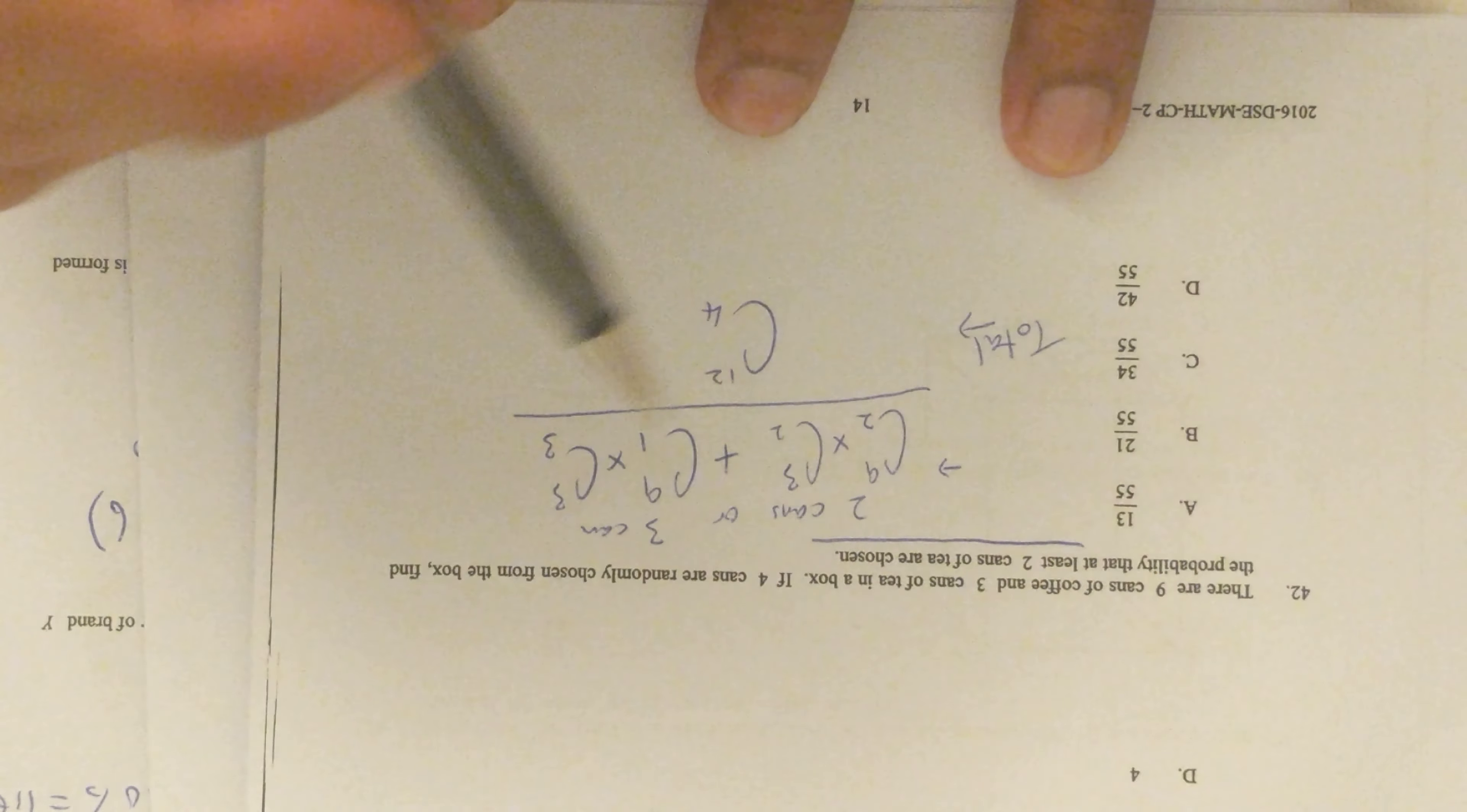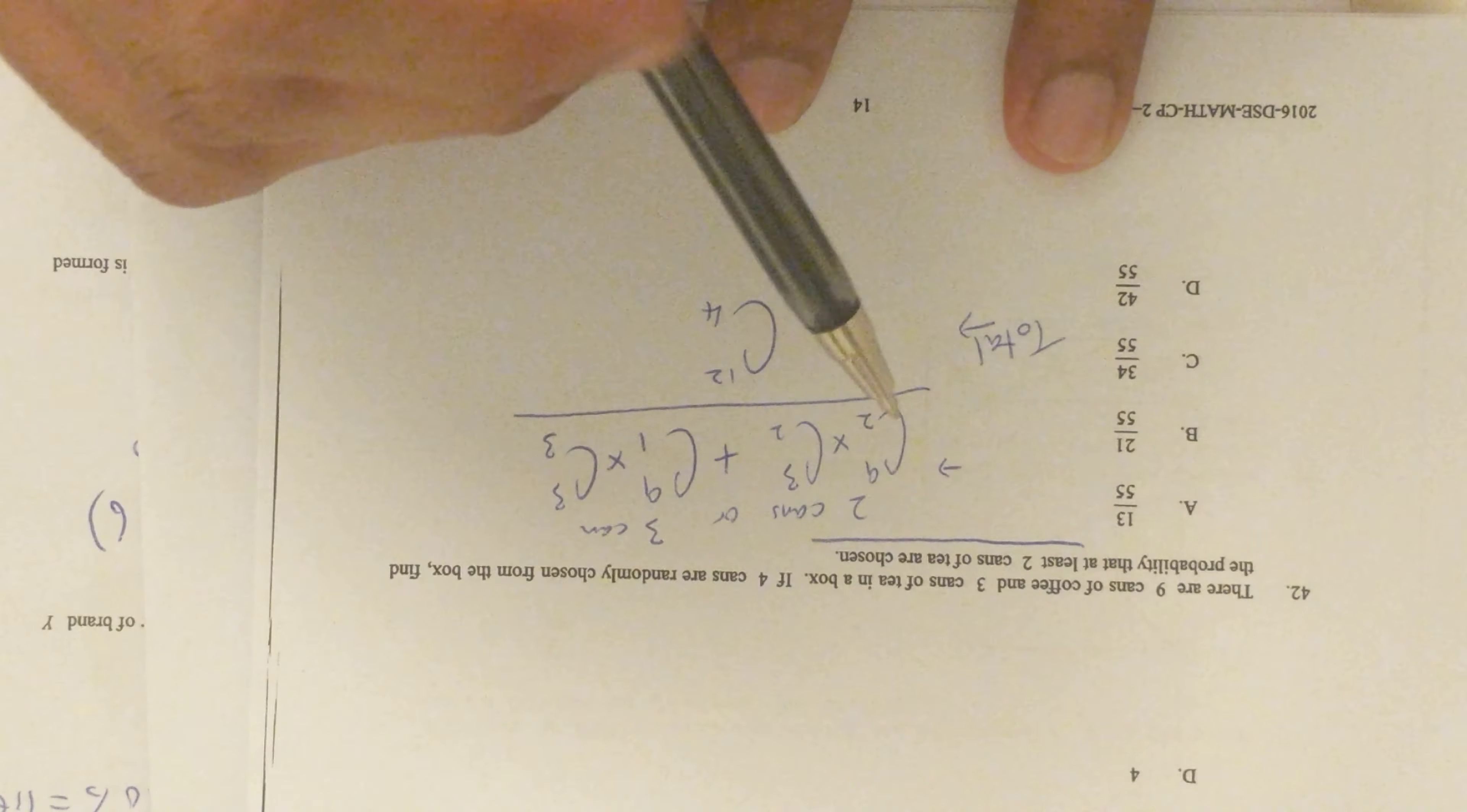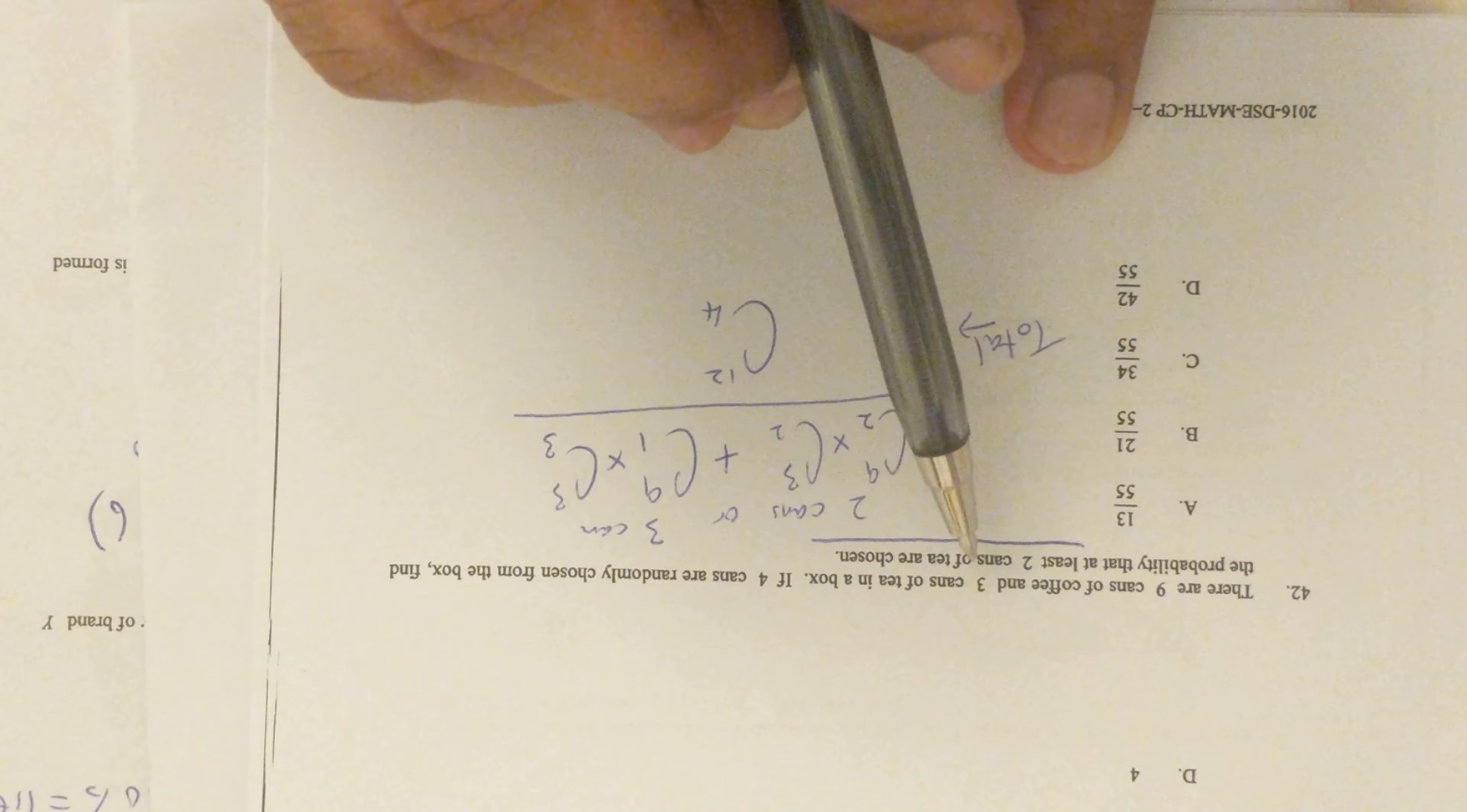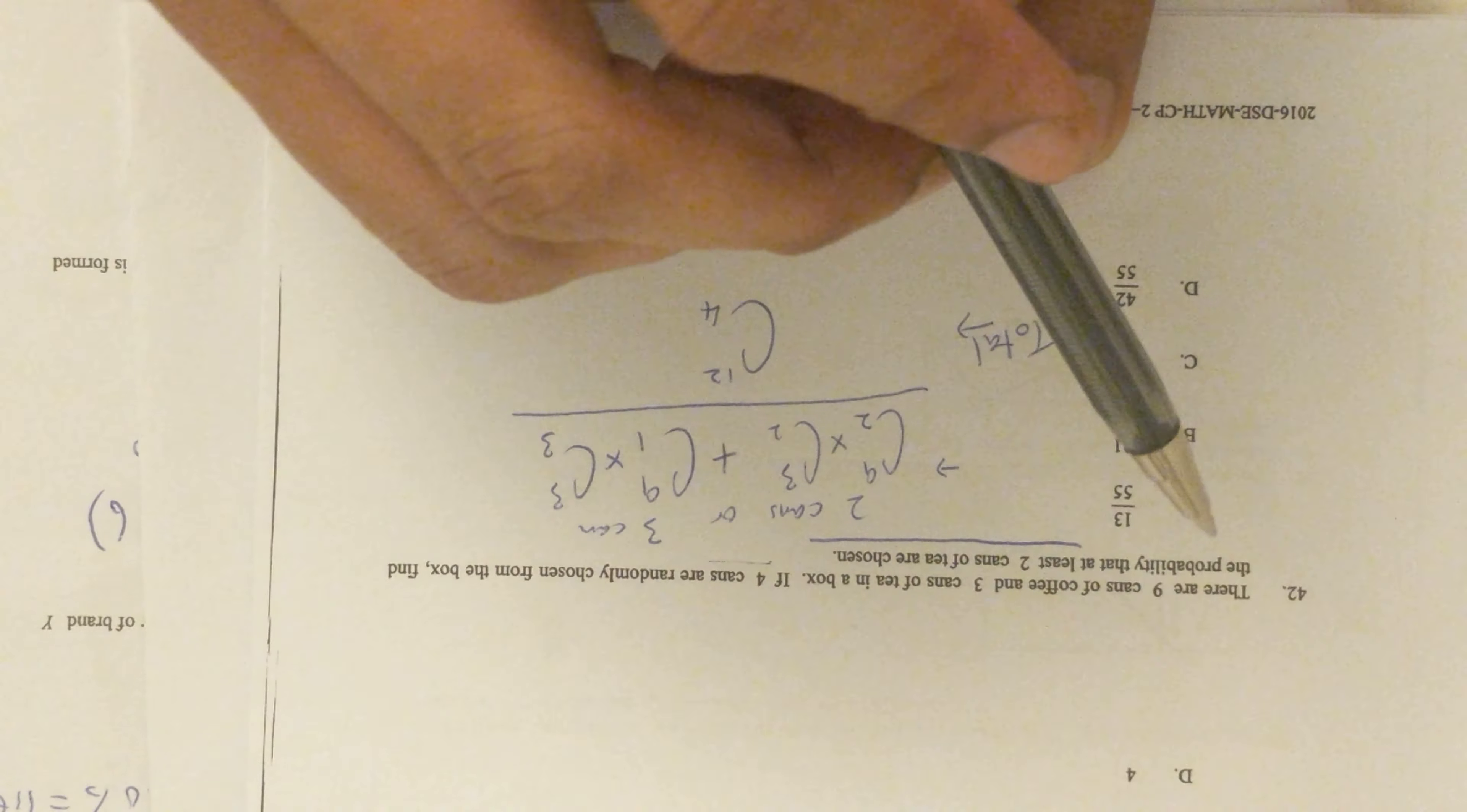Okay, so problem 42 is a probability question with combination and permutation. They say there's nine cans of coffee and three cans of tea, and they want to choose four cans out of these and are asking for the probability that there are at least two cans of tea.